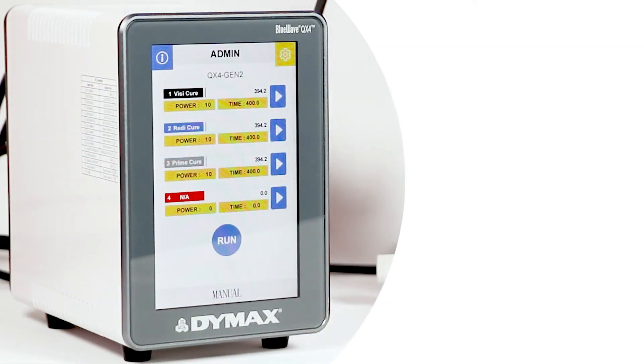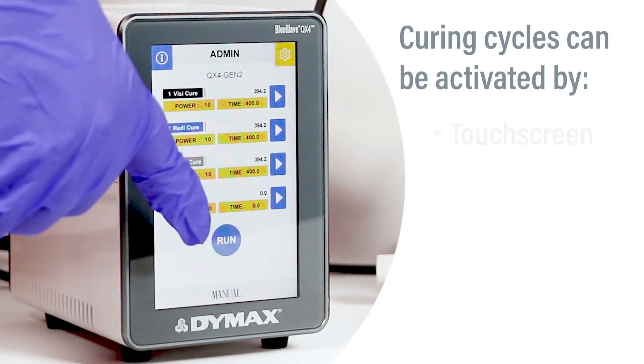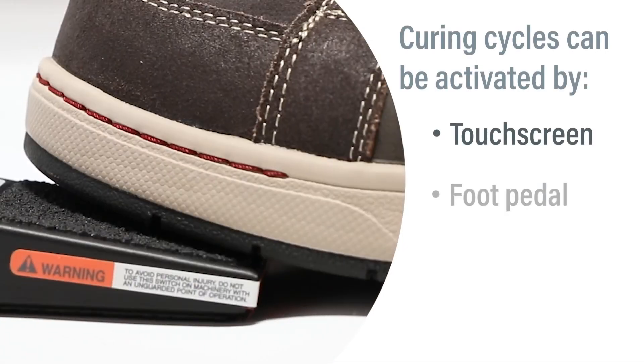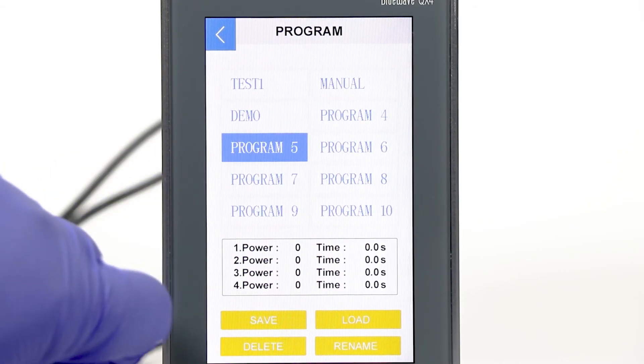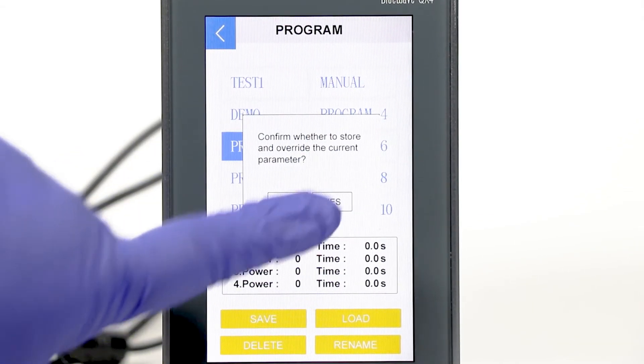Operation of the unit is simple. Curing cycles can be activated by touchscreen, foot pedal, or PLC interface. Curing profiles can be set up, saved, and recalled for later use.